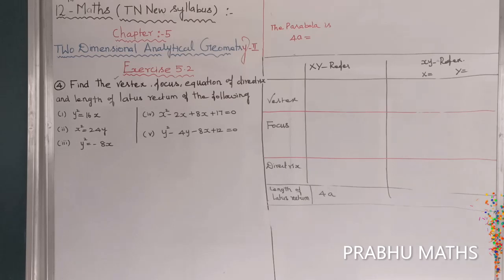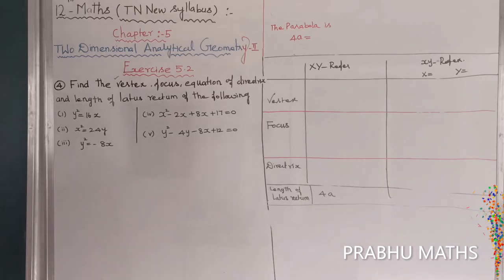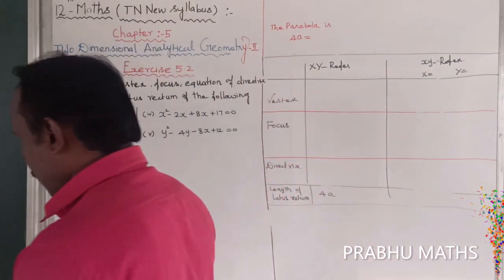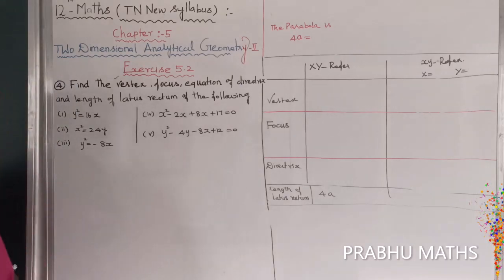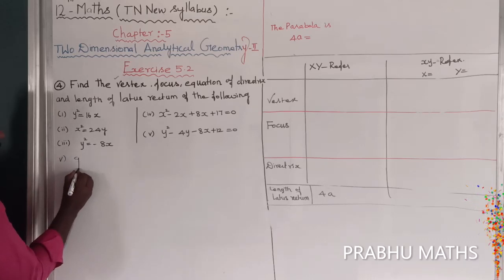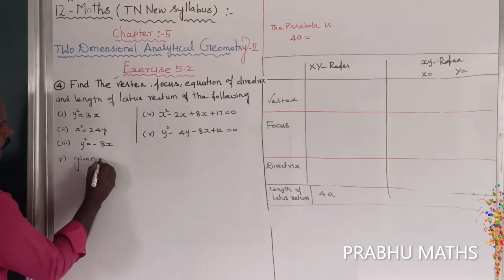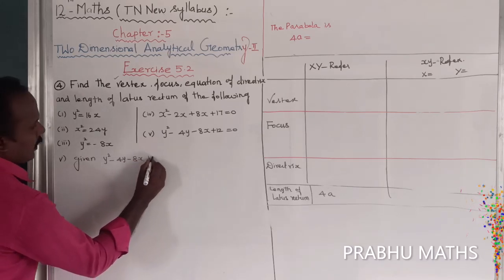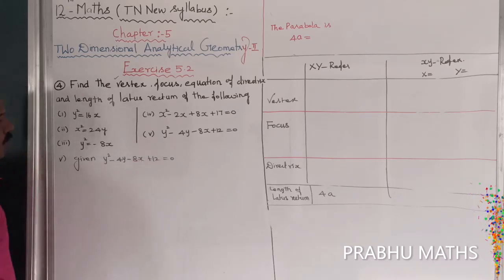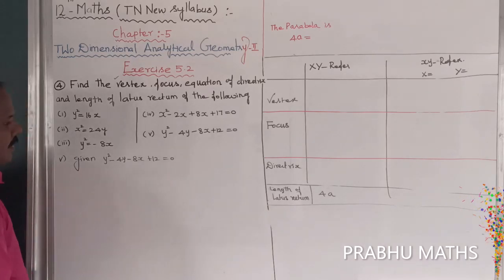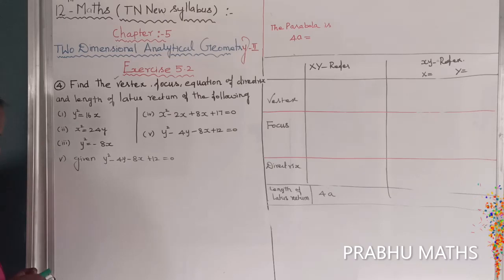Given the equation y squared minus 4y minus 8x plus 12 equals 0, find the vertex, focus, equation of the directrix, and the length of the latus rectum of the parabola. This is the fifth subdivision problem.